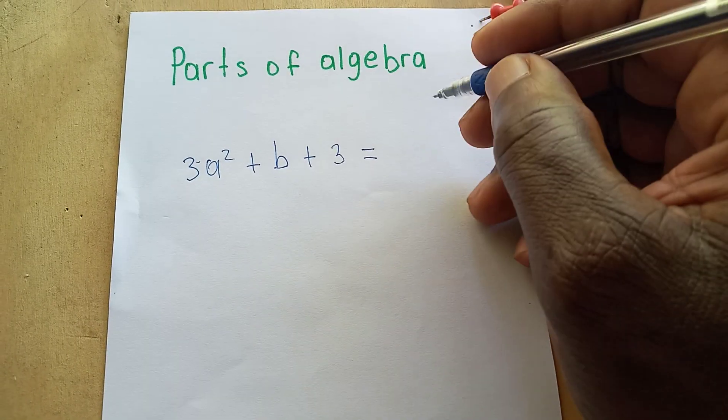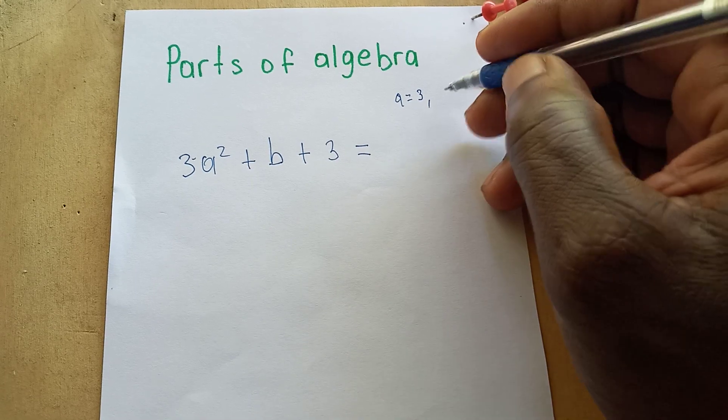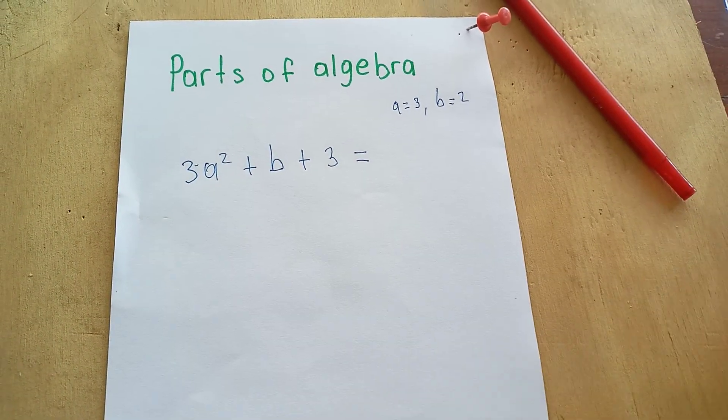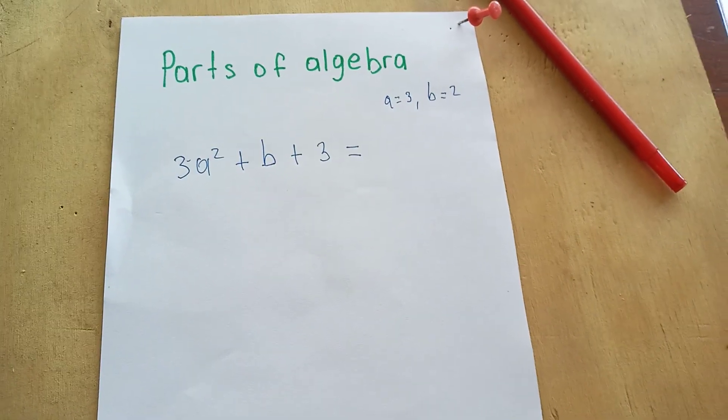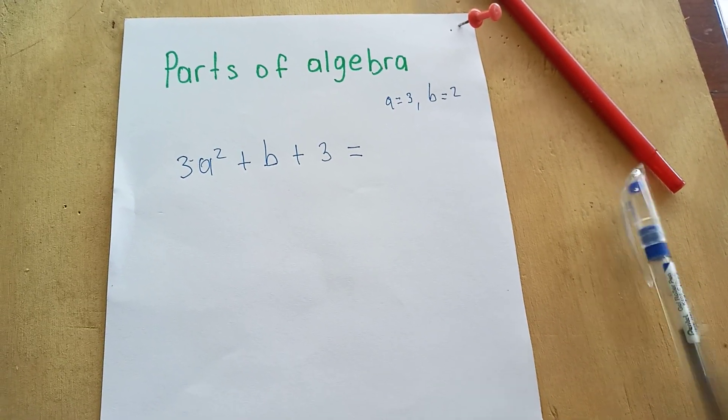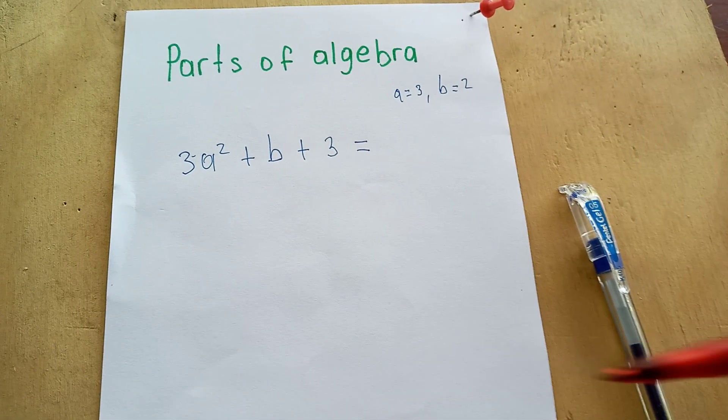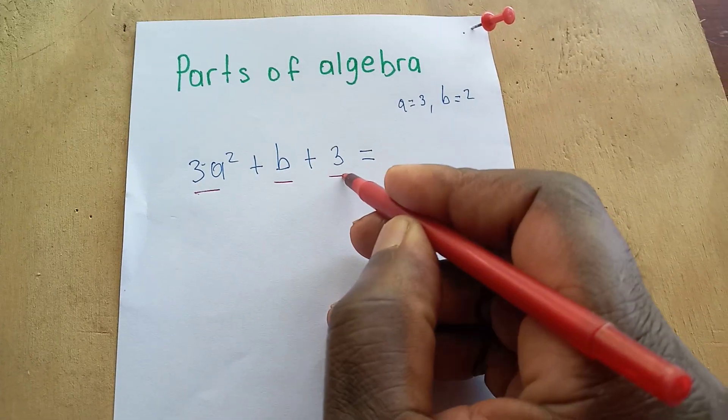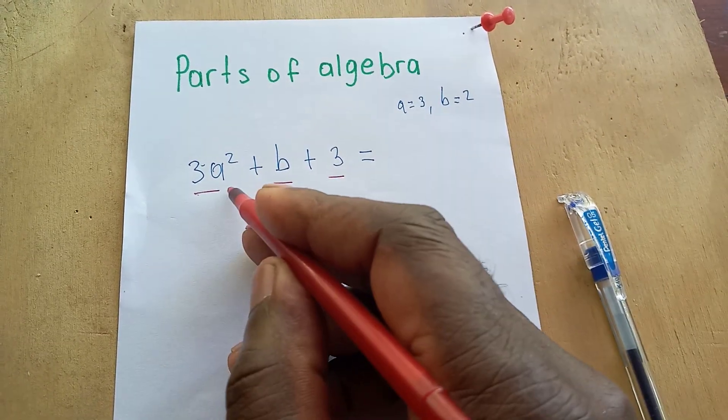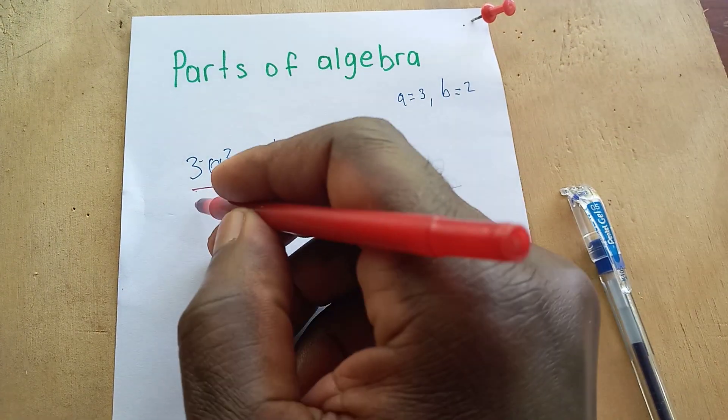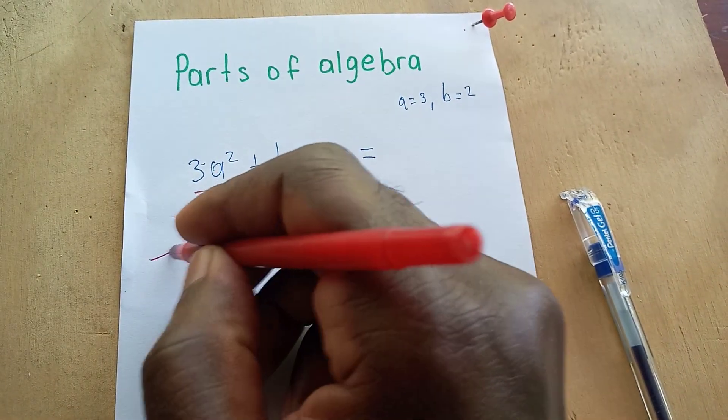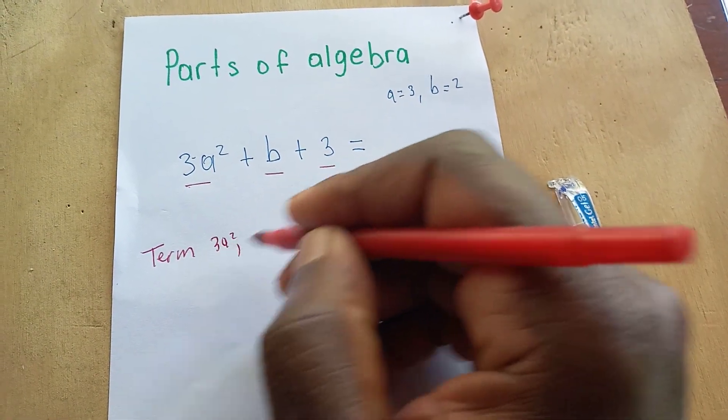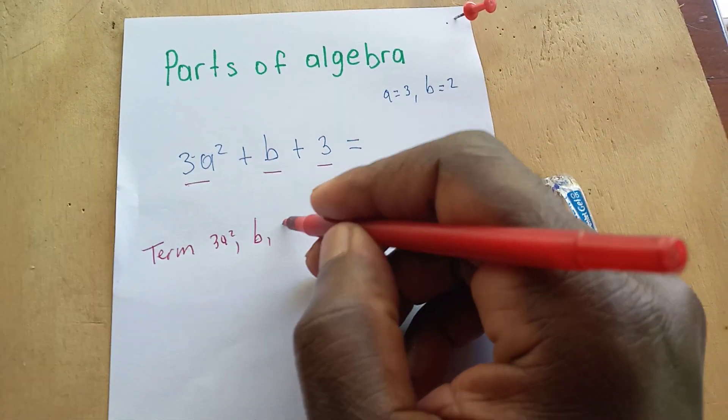Let a be 3 and b be 2, as simple as possible. What would be the different parts of this algebraic equation? These are terms - these are three terms. The terms are found between the operations. So this is a term: 3a², b, 3. Those are the terms, and there's no like term because these are different.